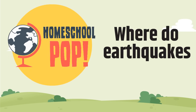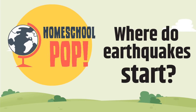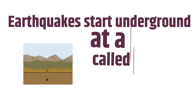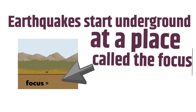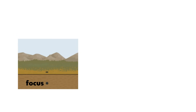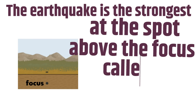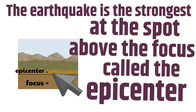Earthquakes start underground at a place called the focus — you can see it in the picture. That's where the earthquake starts. The earthquake is strongest at the spot directly above the focus, called the epicenter. You can see it in the picture — it's directly above the focus. When an earthquake happens, you don't want to be anywhere near the epicenter.